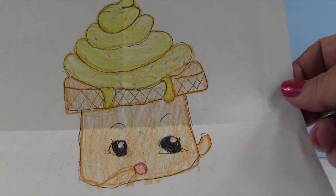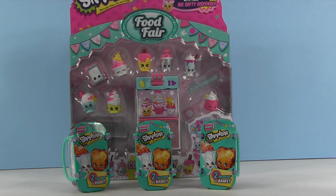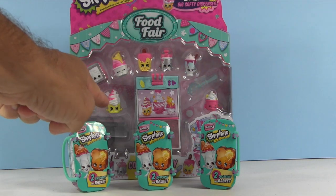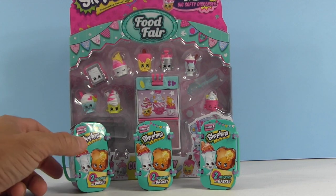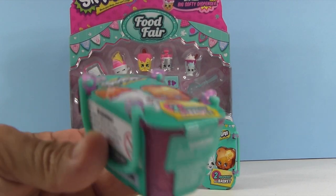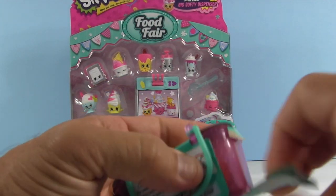Now what's funny is in this particular playset right here, there's Coney. Shopkins, that's right. How about before we open that playset up, we will open up a two-pack and we'll see who we get.